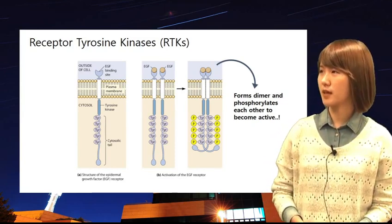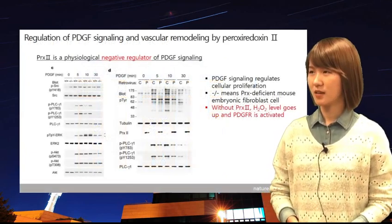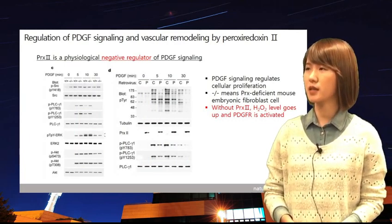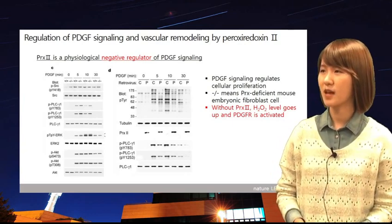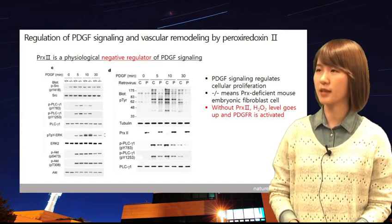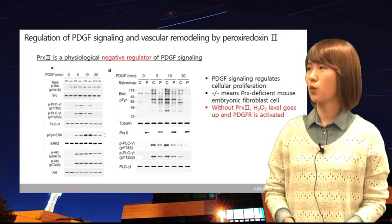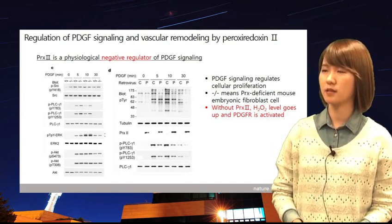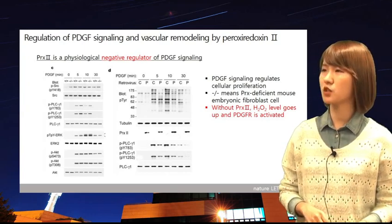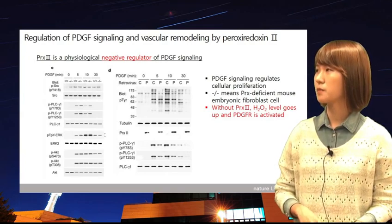If we get rid of phosphates, it becomes an inactive form. Now let's find the role of peroxiredoxin and hydrogen peroxide in PDGF signaling. They deleted PRX2 from mouse embryonic fibroblast MEF, and the H2O2 level went up and PDGFR was activated. Thus, we can say that normally PRX2 is repressing PDGFR activity, so it is a negative regulator of PDGF signaling.